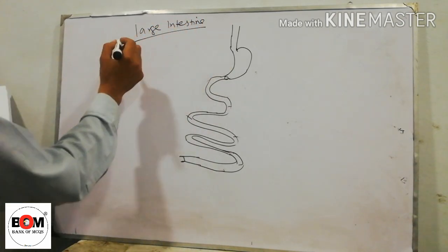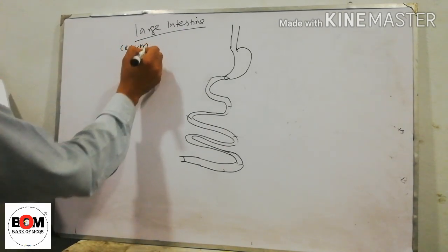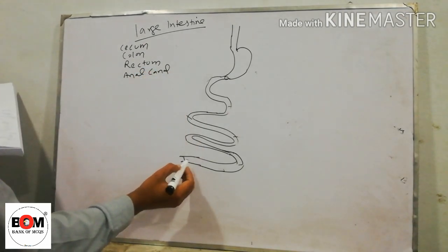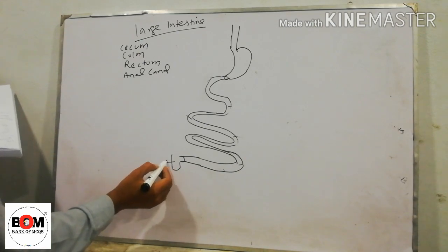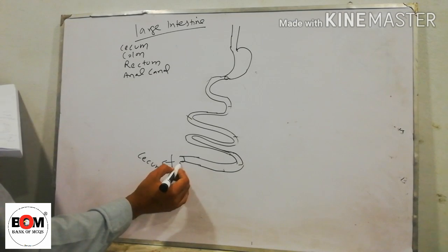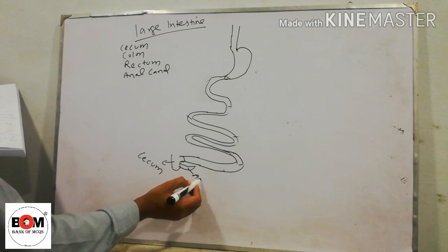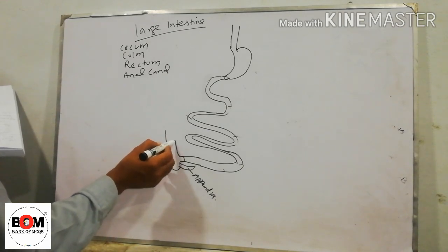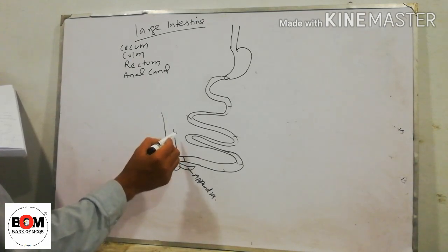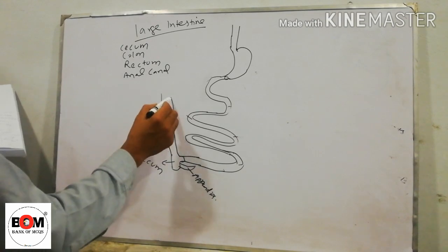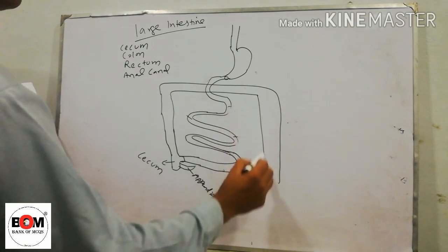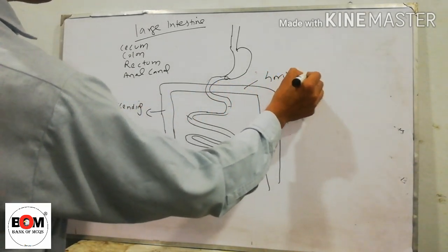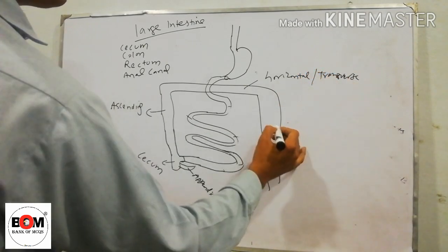The large intestine consists of the cecum, colon, rectum, and anal canal. The ileum opens into the smaller part of the large intestine called the cecum. Attached to the cecum is a small structure called the appendix. From the cecum, waste substances are transferred to the colon, which is a large structure with three parts: ascending, transverse, and descending.